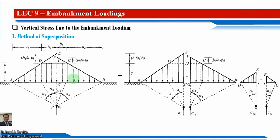We have a simple illustration of a trapezoidal embankment. It is often necessary to determine the vertical stress sigma z beneath road embankments and earth dams. The vertical stress beneath embankments may be determined by either the method of superposition or the asymmetrical method.